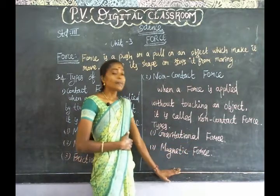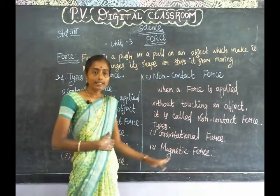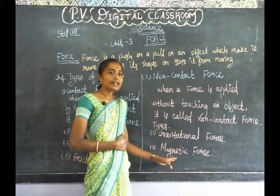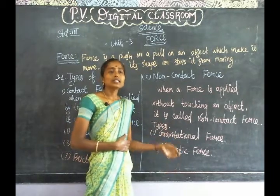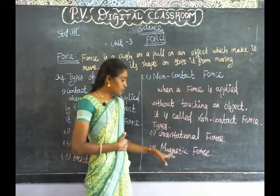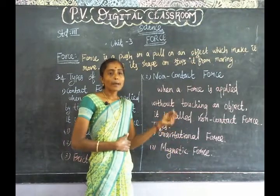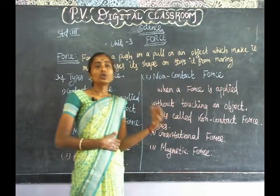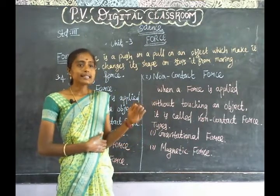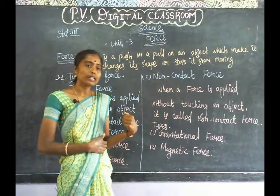Next is magnetic force. A magnet is a metal that attracts iron things. The force applied by a magnet on iron materials, pulling them towards itself, is called magnetic force. It is a pulling force.